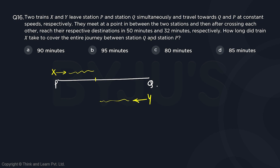And they reach the respective destinations in 50 minutes and 32 minutes respectively. They meet at a point in between two stations. So suppose M is the point where they are going to meet and once they meet, then further they take 50 minutes and 32 minutes.